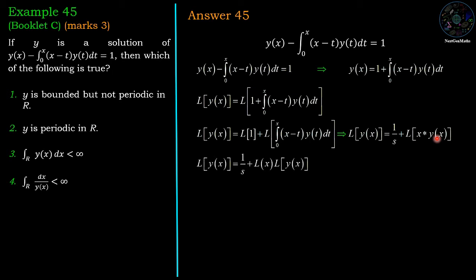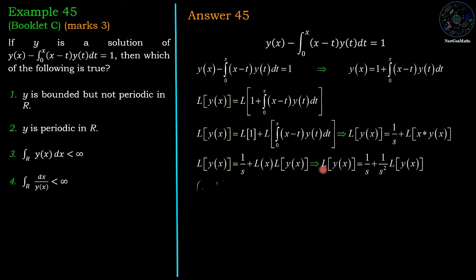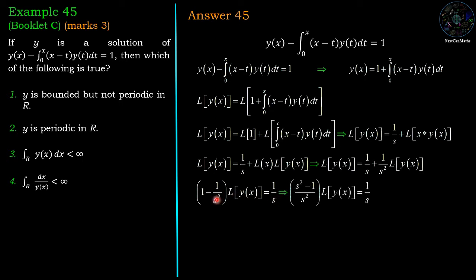Using the convolution property, the Laplace of x star y(x) equals the Laplace of x times the Laplace of y(x), and the Laplace of x is 1/s². So we have (1/s²) times Laplace of y(x). Taking the (1/s²) Laplace of y(x) to the left hand side gives: (1 minus 1/s²) times Laplace of y(x) equals 1/s. Simplifying: (s² minus 1)/s² times Laplace of y(x) equals 1/s.